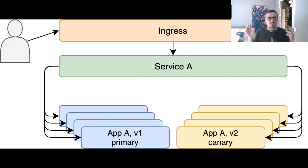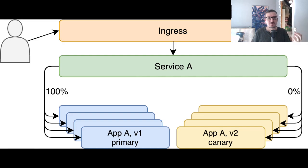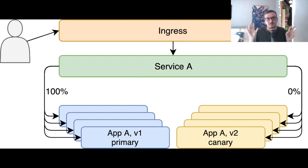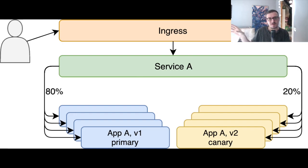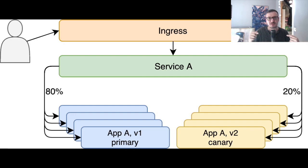We continue sending 100% of the requests to the primary. When the Canary is fully up and running, we change the percentage of requests. For example, we can start redirecting 20% of the traffic to the Canary release — the new release — and 80% to the primary. Then we continue iterating in that manner.